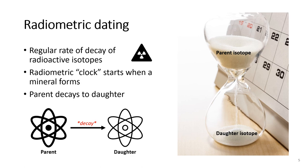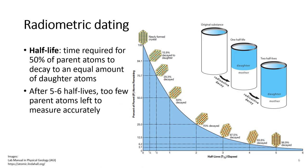The radiometric clock starts once a particular mineral forms, where you have 100% of your starting parent isotope. A half-life is the time required for 50% of parent atoms to decay to an equal amount of daughter atoms. Once a mineral forms, you have 100% of your initial parent atoms because it is newly formed. After one half-life, 50% of those initial parent atoms have decayed into daughter atoms.